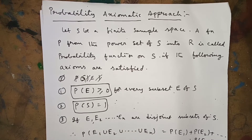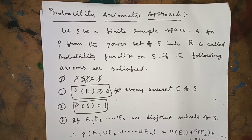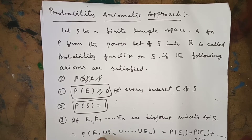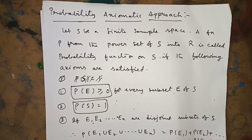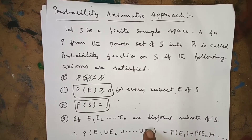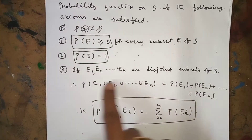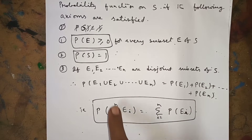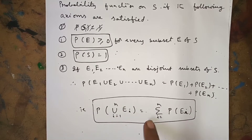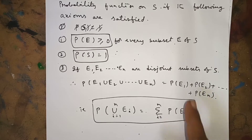The first axiom: P(E) ≥ 0 — the probability of an event is always non-negative. The second axiom: P(S) = 1. The third axiom: P(E₁ ∪ E₂ ∪ ... ∪ Eₙ) = P(E₁) + P(E₂) + ... + P(Eₙ). Symbolically, P(∪ᵢ₌₁ⁿ Eᵢ) = Σᵢ₌₁ⁿ P(Eᵢ).